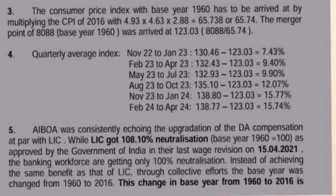As per the quarterly average index calculation: November 2022 to January 2023 is 7.43%; February 2023 to April 2023 is 9.40%; May 2023 to July 2023 is 9.90% (index 132.93); August 2023 to October 2023 is 12.07%; November 2023 to January 2024 is 15.77%; and February 2024 to April 2024 is 15.74% (which should actually be 15.73%, a minor transcription error).